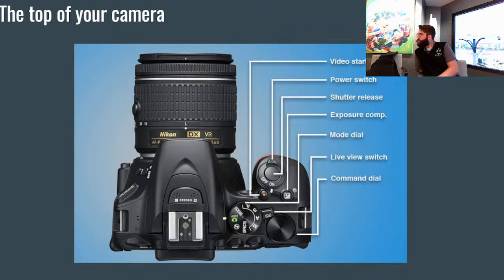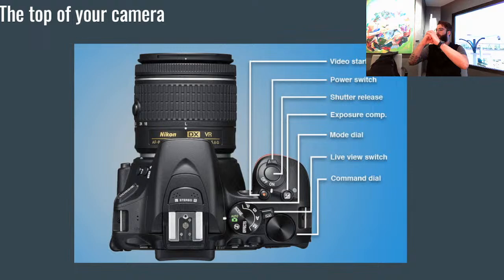So whenever you're in a priority mode, priority equals command dial. In auto, the camera does all the work. In aperture priority, you control the iris of the camera — making it bigger or smaller — and the camera handles everything else. In shutter speed priority, you control how fast or slow the shutter is closing, and the camera handles the rest.